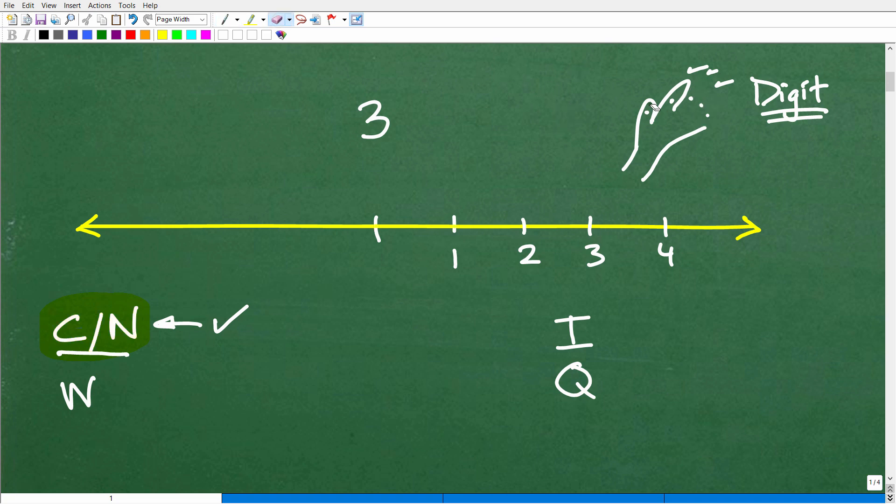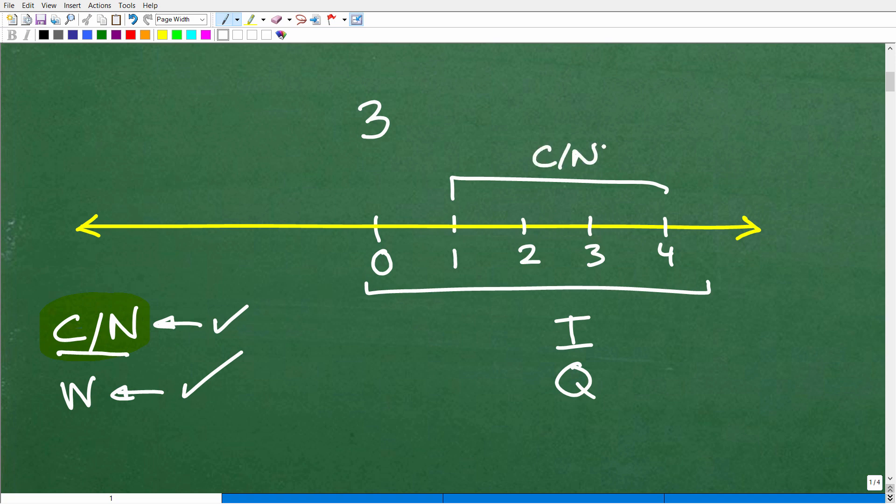Let's go ahead and move on to the next number that we can classify 3 as. And that is something called the whole number system. And the whole numbers is basically the counting number or the natural numbers, but we have to add a very important number and that is zero. So when we add zero, these numbers right here are the counting or natural numbers. But these numbers right here, let me move this down so we've got some room here. These numbers right here are the whole numbers. So these are the whole numbers because we need zero.